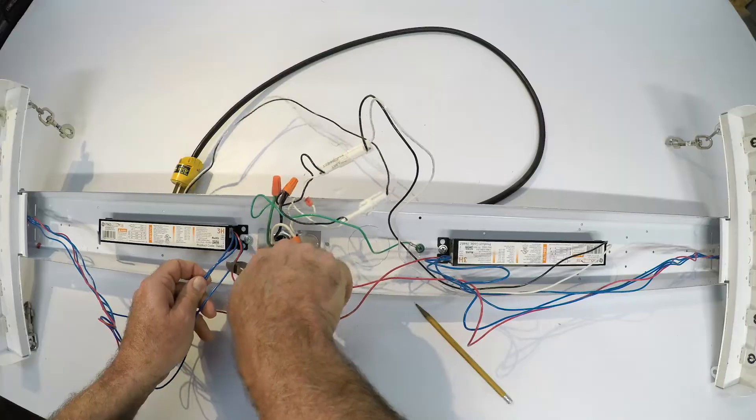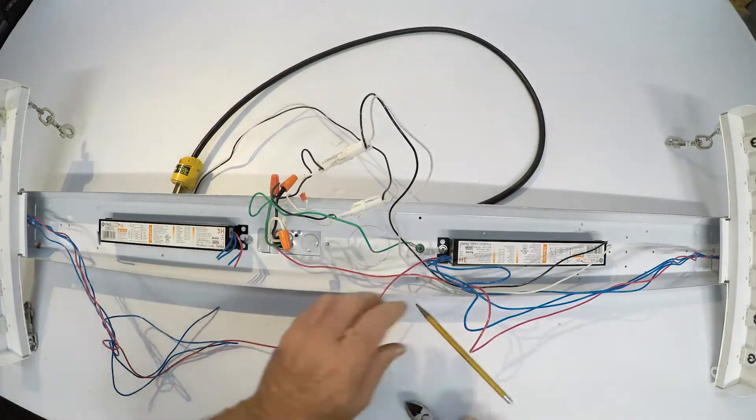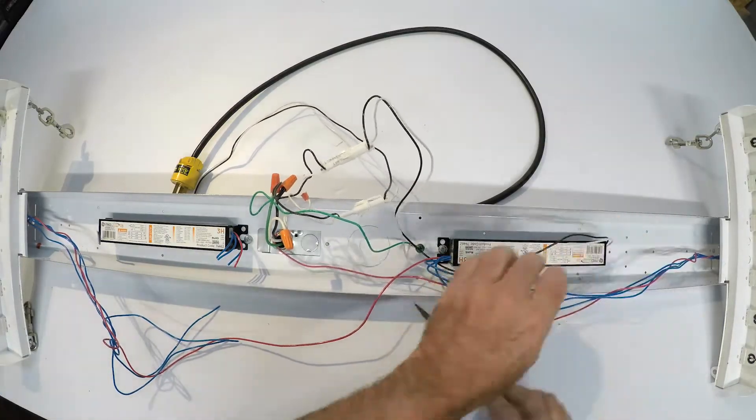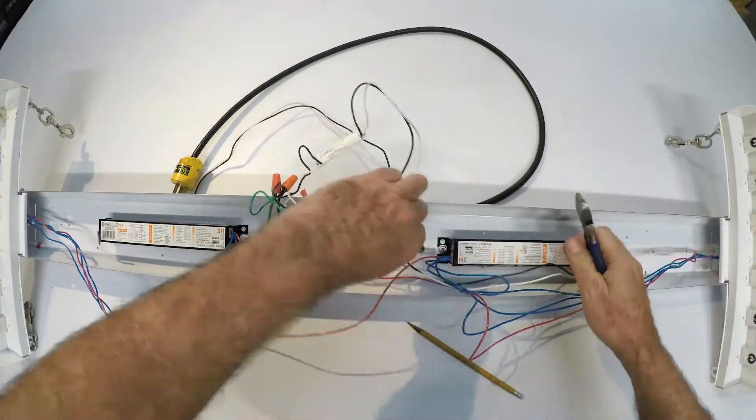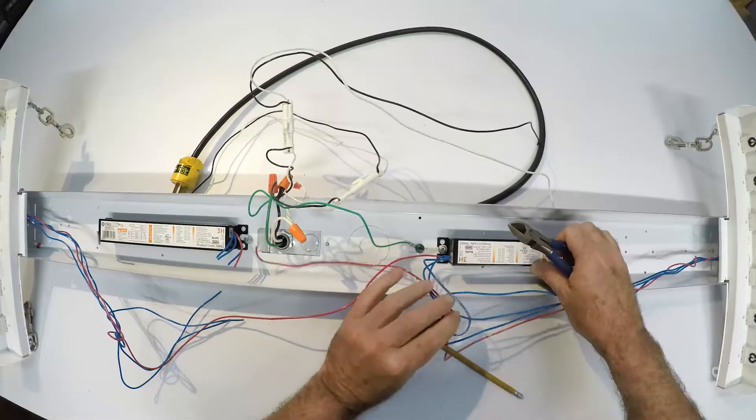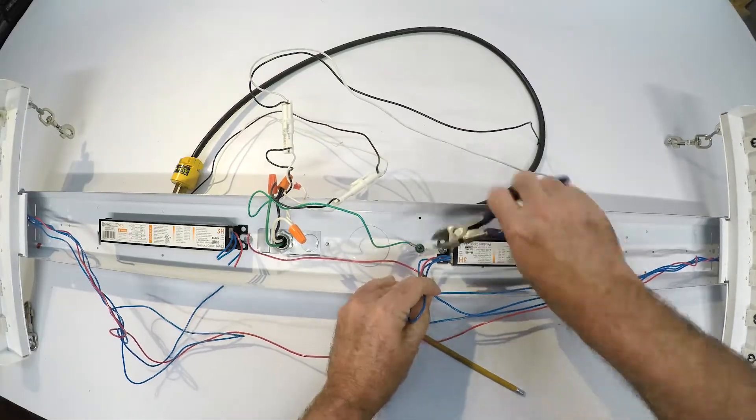I'm removing the wires coming to the ballast and pulling everything back. I'm going to do the same on this side with this ballast. Cutting the wires close to the ballast and pulling them back. Again here I'm going to just cut all the wires.